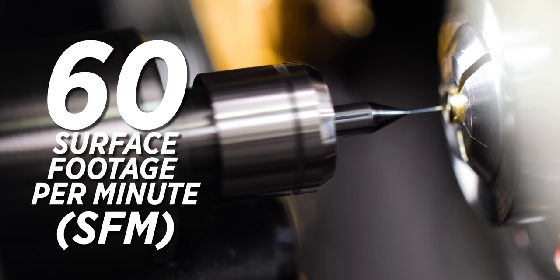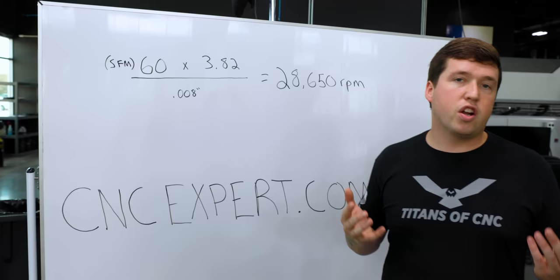By the way thank you guys your products rule. So if you take 60 surface foot and you multiply it by 3.82 and then divide it by 8 thousandths you'll get 28,650 RPM.